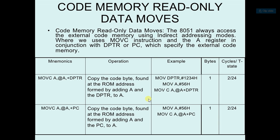See the instruction MOVC — here C means code — A comma at A plus DPTR. What it will do is copy the code byte found at the ROM location formed by adding A and the DPTR to A.